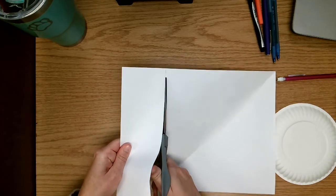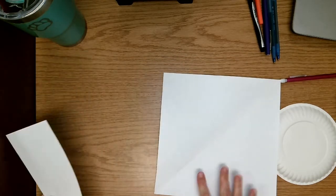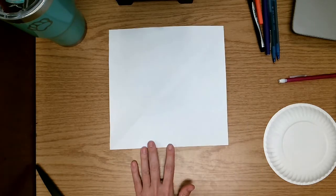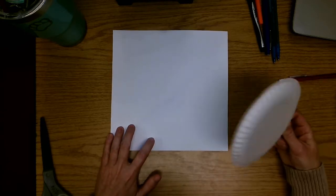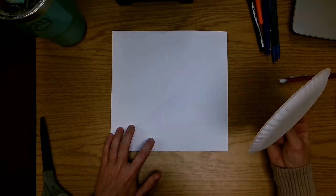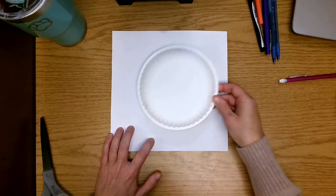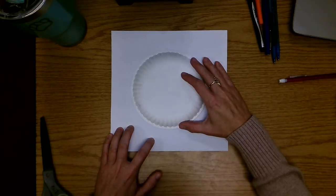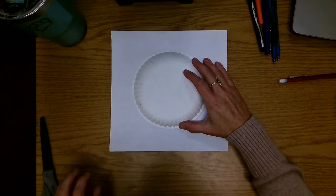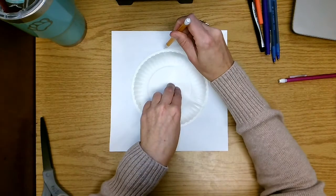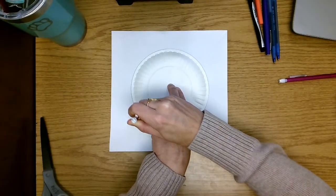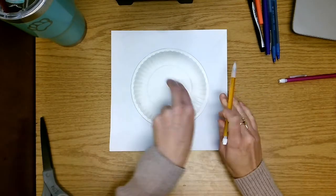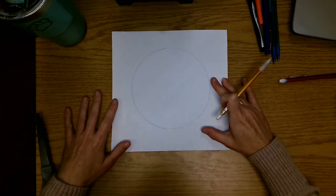Now we have a square. Our next step is we are going to be tracing a circle in the middle of our paper. At school we're going to use a paper plate. If you are working on this at home, you can use anything that's a circle that fits inside your square. So I'm going to put my paper plate right here in the middle and I'm going to trace right around the edge. This circle is going to end up being my sun and my moon at the exact same time.